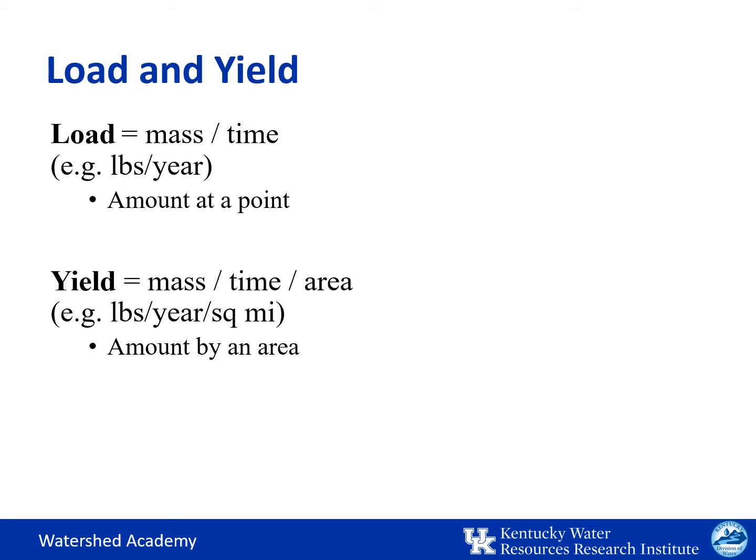To account for geographic size differences between watersheds or subwatersheds and enable the comparison and prioritization of subwatershed areas during the watershed planning process, a pollutant yield is calculated by dividing the total load by a unit of area such as square miles.